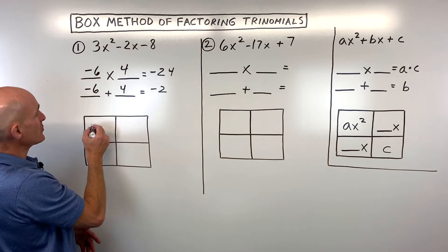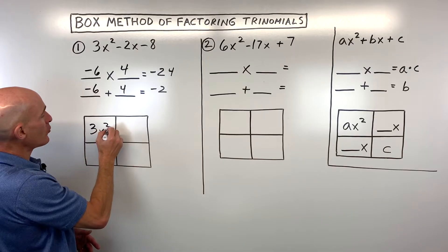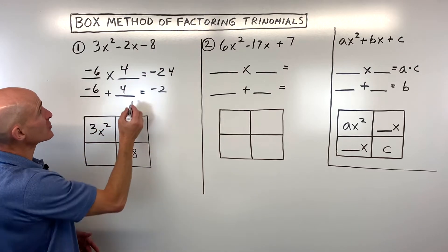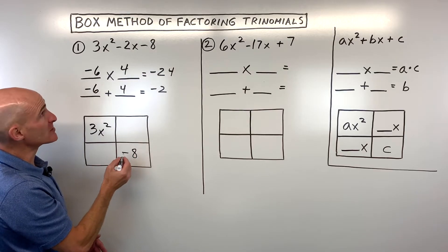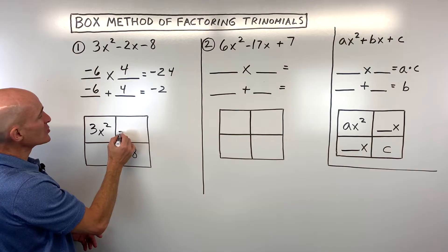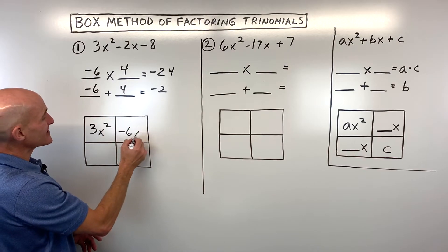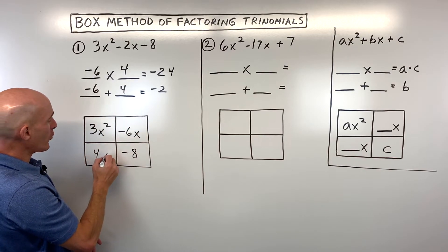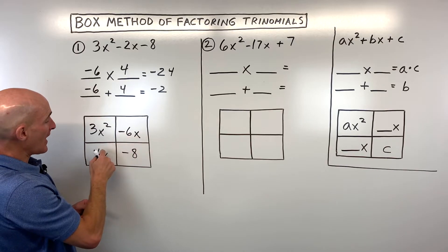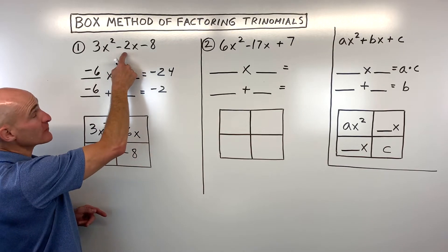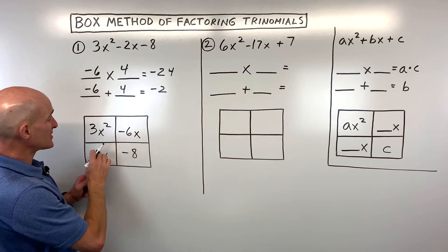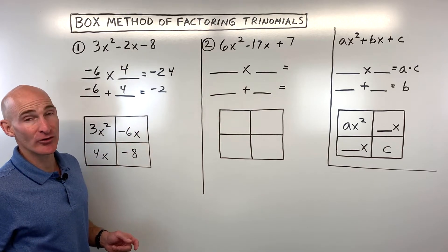So we're going to take this first term and put it in our upper left-hand corner. We're going to take our constant, negative 8 — make sure if it's a minus, you put the negative there; if it's plus, it's a positive. Then using these two numbers, we're going to write negative 6x and 4x. Don't forget the variable. When you add these together, that adds up to negative 2x, so we're just writing the middle term in two separate parts.